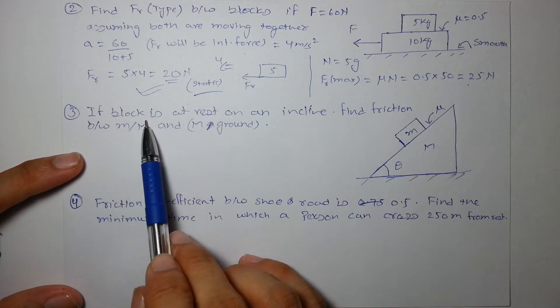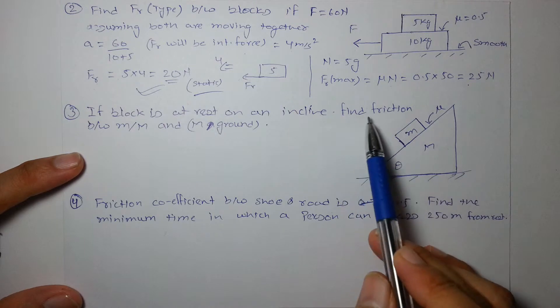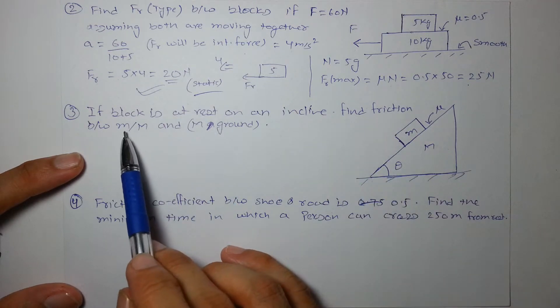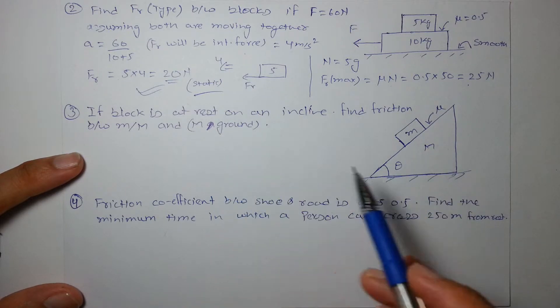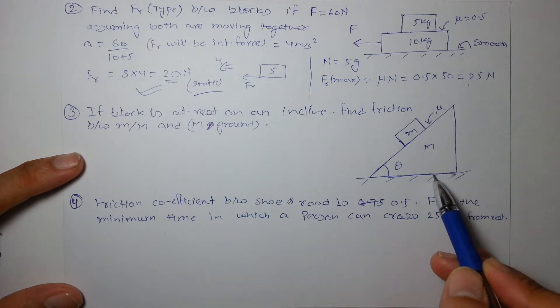In the next question, there is a block which is at rest on an incline. Find the friction between capital M and small m and friction between capital M and ground.